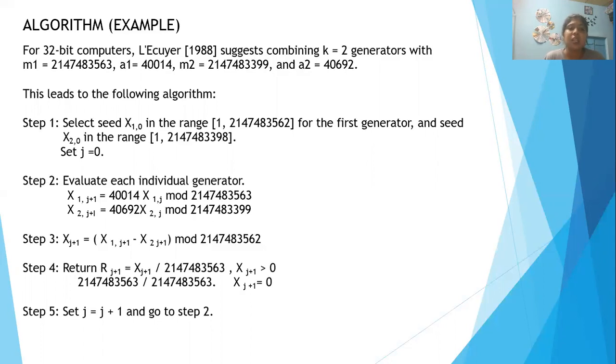Step 1: select a seed value for the first generator, X_i,0, in the range 1 to m_1 minus 1. We take that value as 214743562 for the first generator,